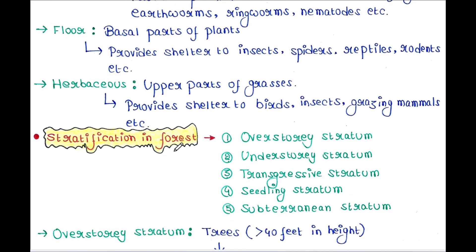Forest stratification has five different layers: overstory stratum, understory stratum, transgressive stratum, seedling stratum, and subterranean stratum.